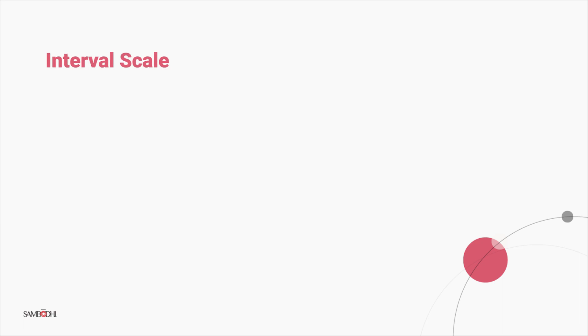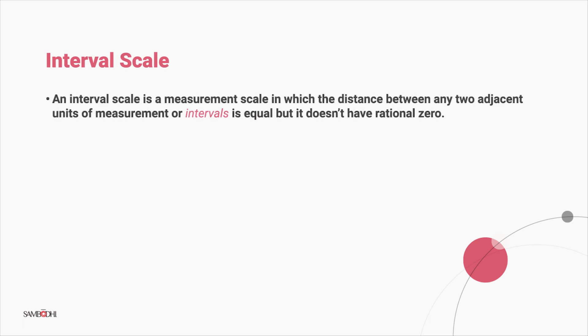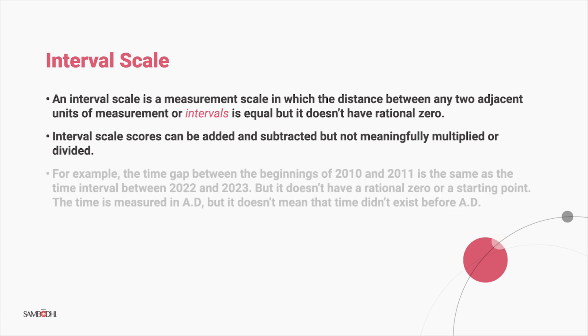It is time to discuss the interval scale. It is a measurement scale in which the distance between any two adjacent units of measurement or intervals is equal, but it does not have a rational zero. Interval scale scores can be added and subtracted, but not meaningfully multiplied or divided. For example, the time gap between the beginning of 2010 and 2011 is the same as the time interval between 2022 and 2023, but it does not have a rational zero or a starting point. The time is measured in AD, but it does not mean that time did not exist before AD.